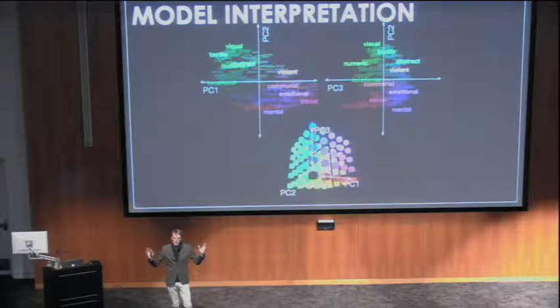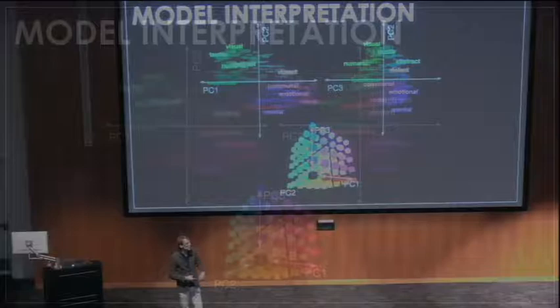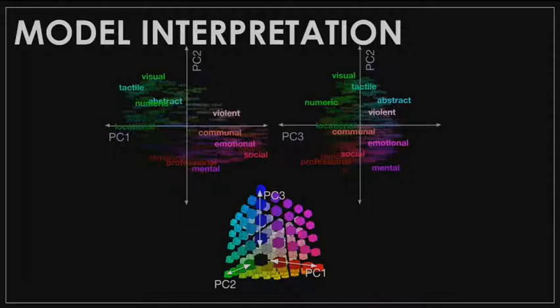What we're going to do instead is summarize the information from the voxels into a few dimensions that we can visualize simultaneously. I did this using principal components analysis — I took this big matrix of voxels by their weights in the regression models and applied PCA. We get three to four dimensions out of this PCA that are really consistent across subjects. Here I'm trying to interpret what the first three dimensions look like. I'm using a color map where I color each word projected into the PC space according to where it lies along the first three PCs.